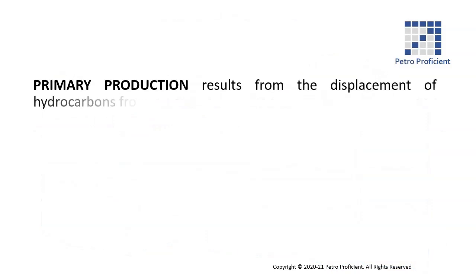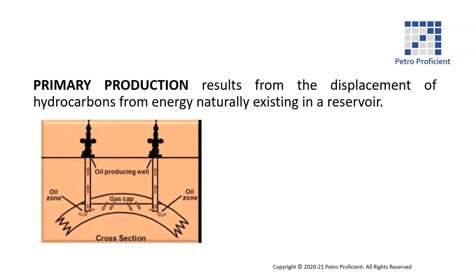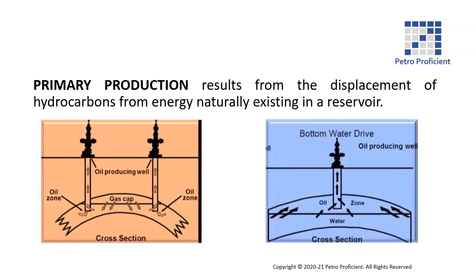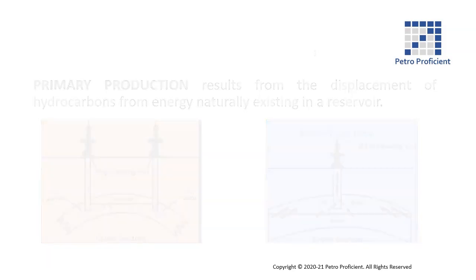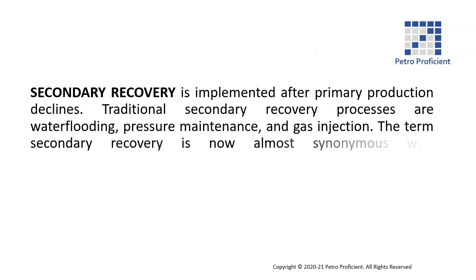Primary production results from the displacement of hydrocarbons from energy naturally existing in a reservoir. Secondary recovery is implemented after primary production declines. Traditional secondary recovery processes are water flooding, pressure maintenance, and gas injection. The term secondary recovery is now almost synonymous with water flooding.